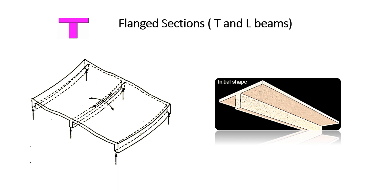Here you can see a rectangular beam with a slab on top, and similarly a rectangular beam with slab on both sides. When the slab and beam are constructed together at the same time, they act as a single unit, and the behavior is different from that of a rectangular beam section. Based on whether the slab spans in one or two directions, there are two kinds of flange sections: T-beam and L-beam.